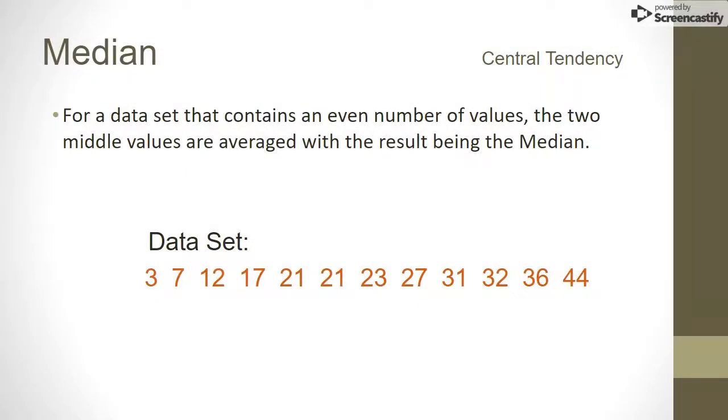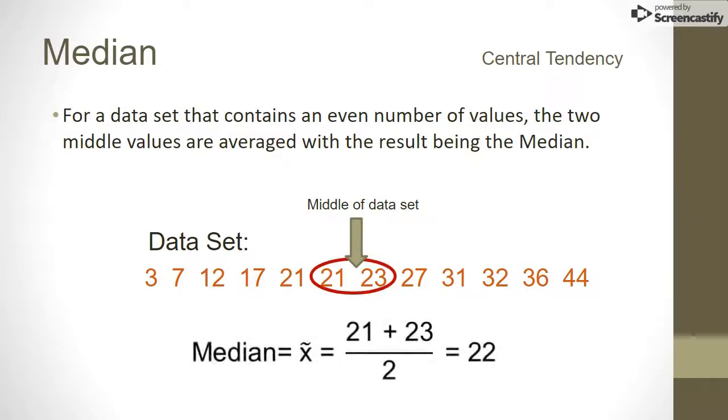If there's an even number of data values, the middle of the data falls between two values. The median is the average of the two values adjacent to the middle point. In this case, the average of 21 and 23 would be 22.